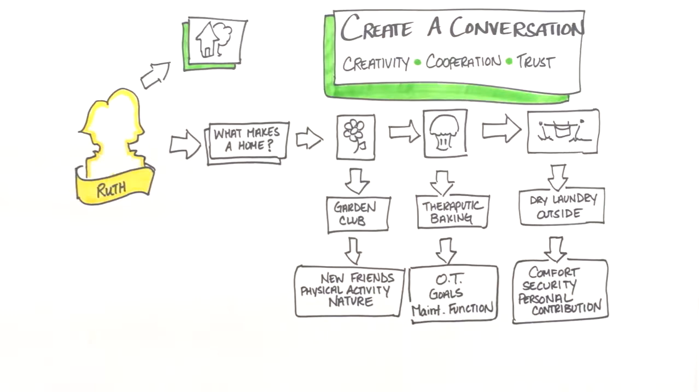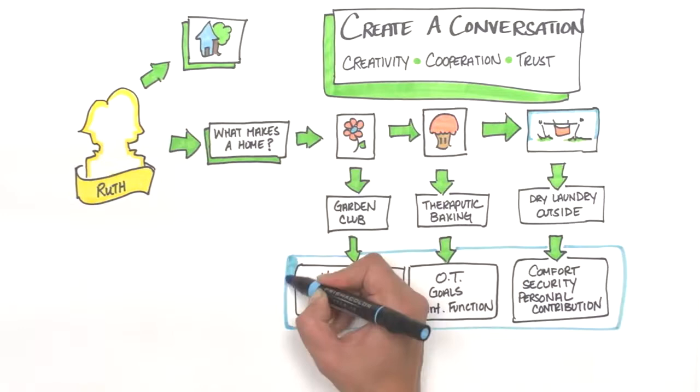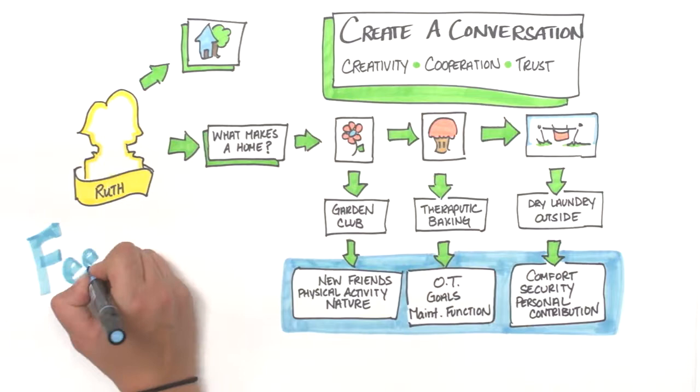We can ask Ruth about the garden she used to have, and we can talk with Ruth about how she loved to bake, and about how she loved the smell of laundry that had been dried outside in the sunshine. By having this conversation before jumping to talking about living arrangements for Ruth, we're not only learning what would make Ruth happier,